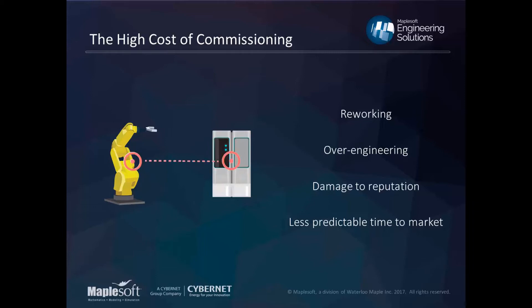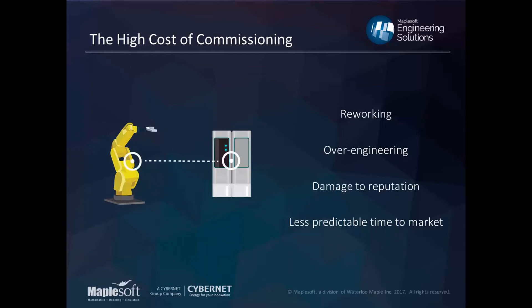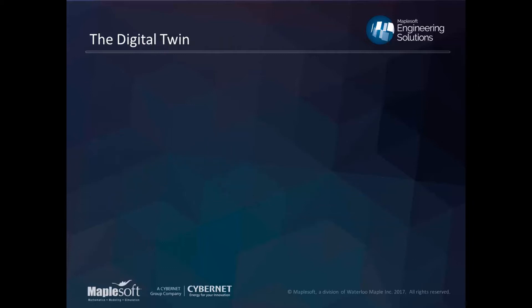It's not just about money — it's the cost of rework, but also the cost of over-engineering: either your margins are thinner because you're using bigger motors than intended, or you're pricing yourself out of competitive deals because you haven't correctly gauged the dynamics of your system. There's also damaged reputation if you ship something that fails, and it's much less predictable to hit a time-to-market window when you don't know how long the integration phase will really take.